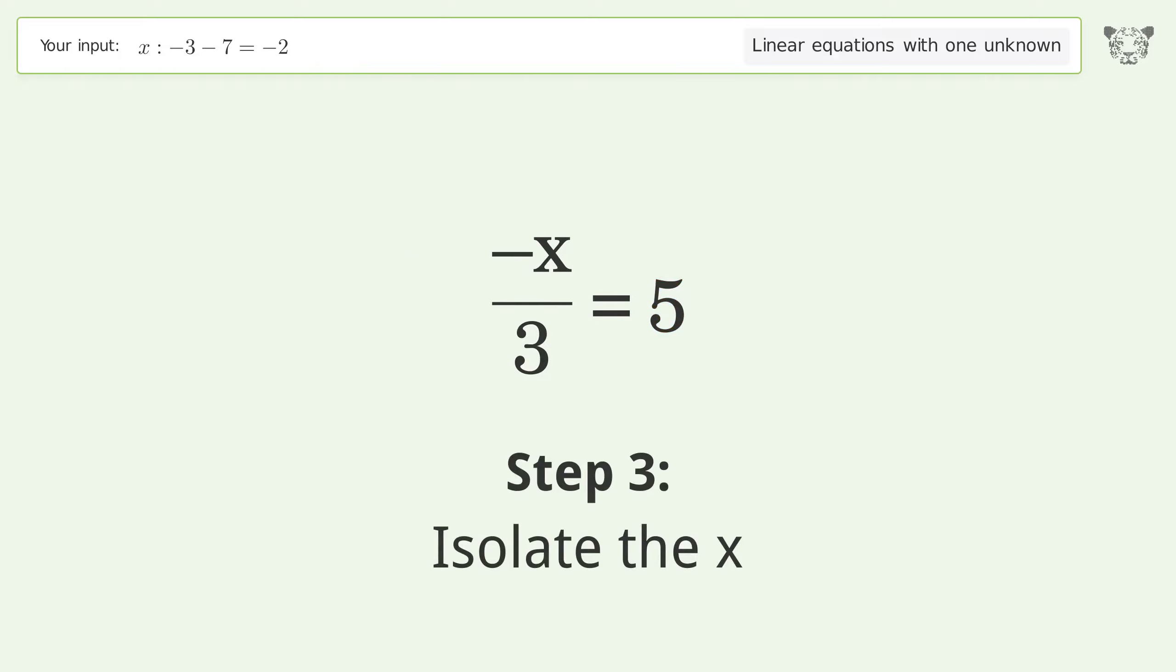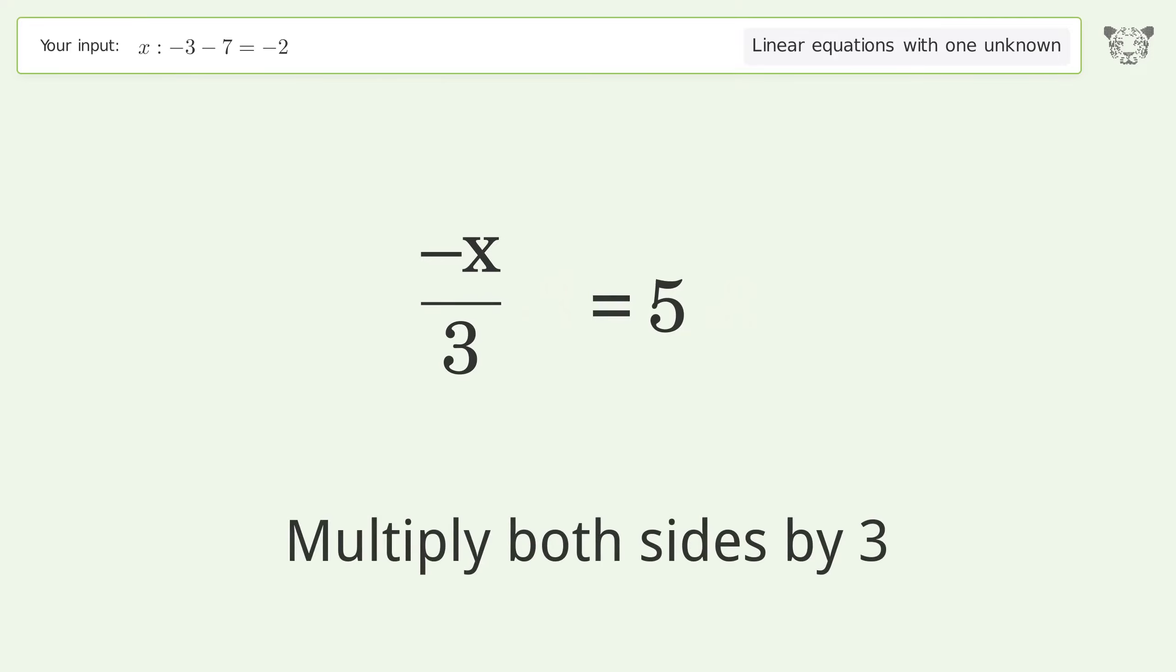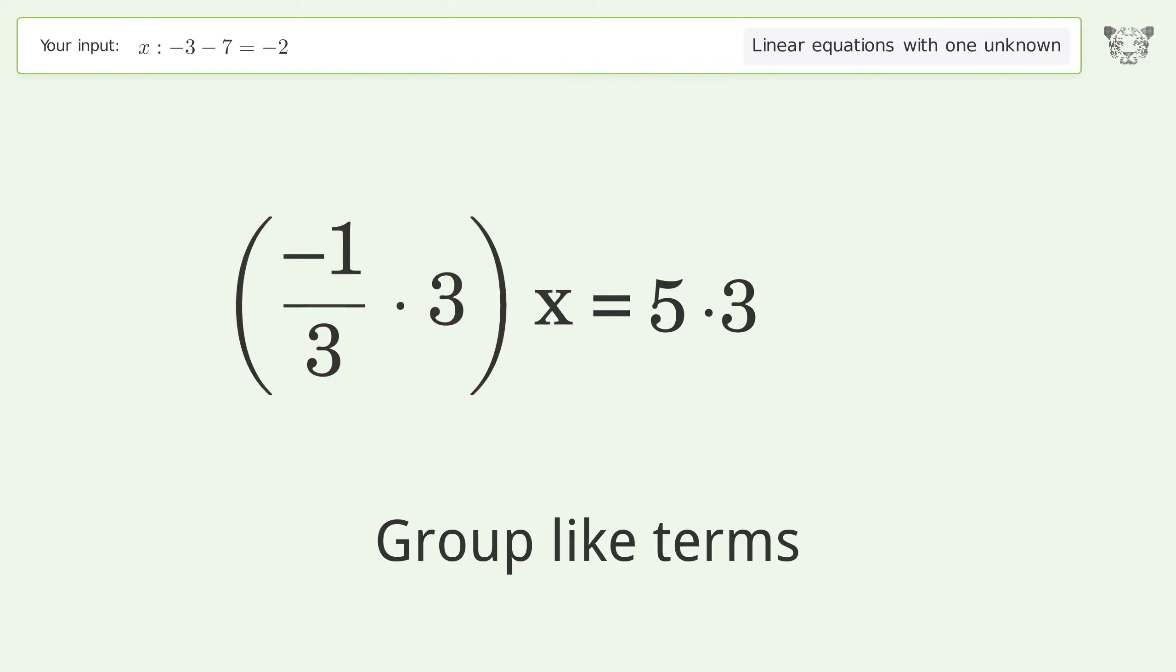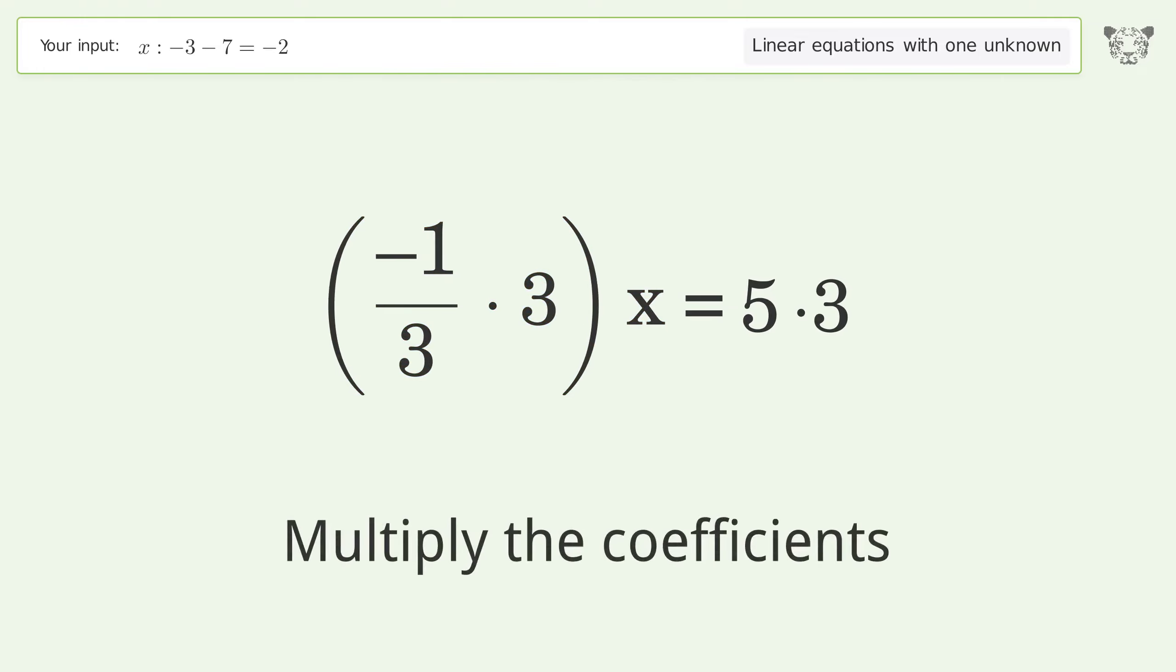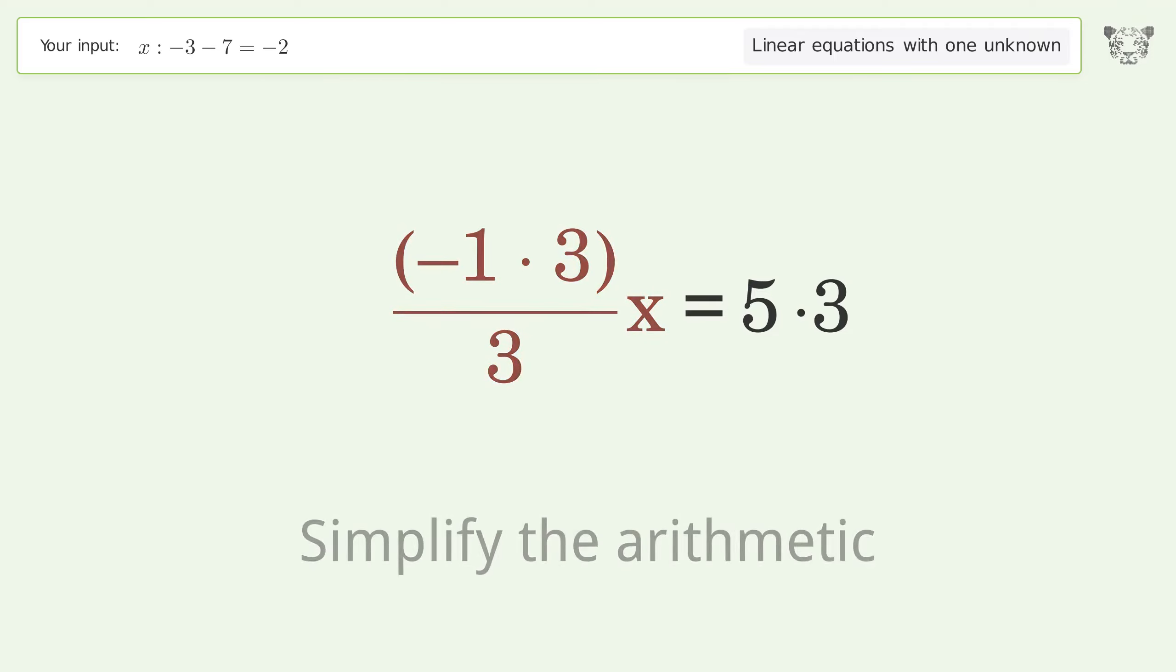Isolate the x. Multiply both sides by 3. Group like terms. Multiply the coefficients. Simplify the arithmetic.